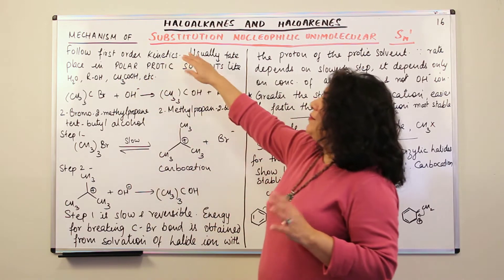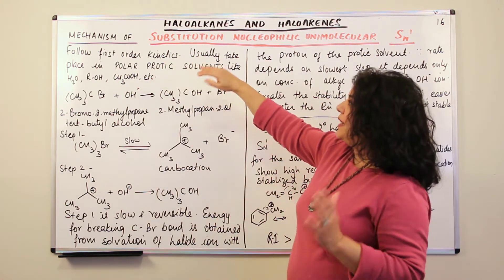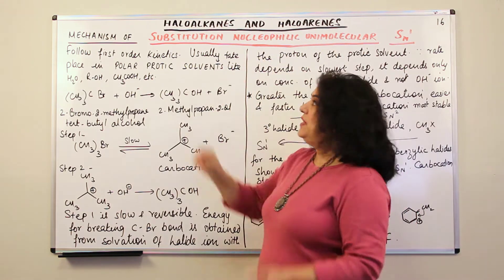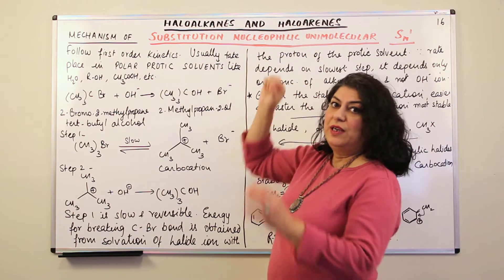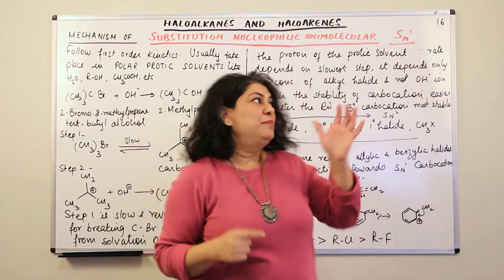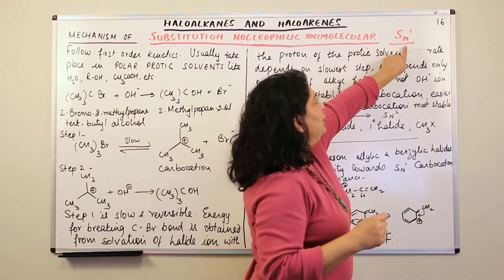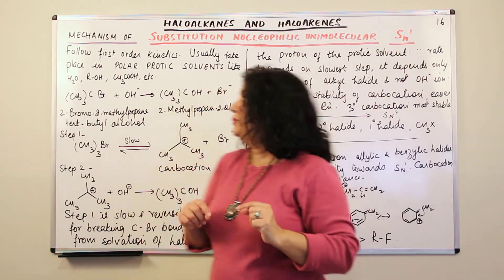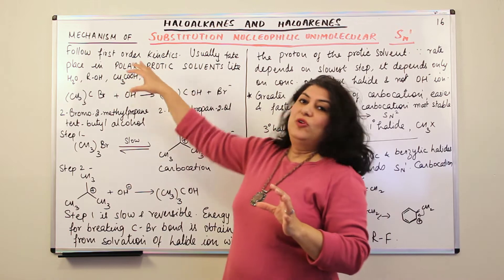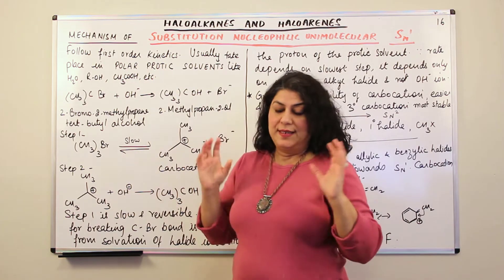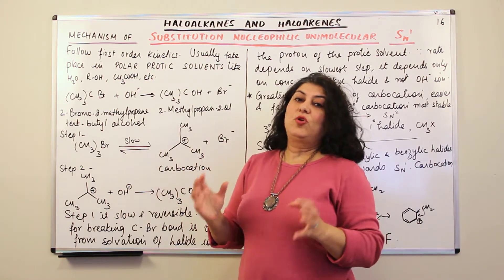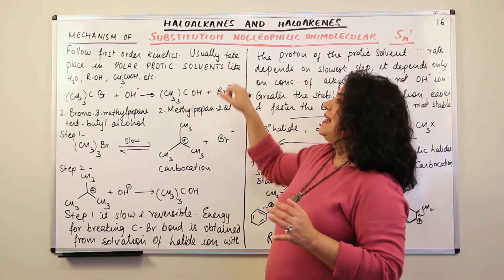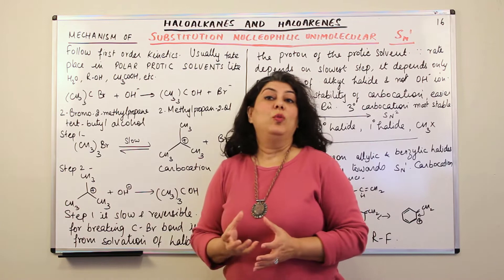So in this video we are studying the mechanism of substitution nucleophilic unimolecular. The reason why we write substitution nucleophilic unimolecular is because when we write the symbol, we write substitution nucleophilic and one means unimolecular, one molecule. So it follows first order kinetics. This is the first important thing about why it is called unimolecular substitution. And usually it takes place in polar protic solvents.